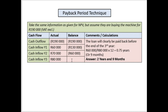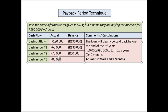I get 80,000 in — I don't care about the balance because I've already exceeded the period. So the loan will clearly be paid back before the end of the third year. Somewhere in that third year we are cancelling out the negative 60,000. So how do we calculate it? The balance left is 60,000, my income expected in that year is 80,000. So 60,000 over 80,000 multiplied by 12 — because there are 12 months in a year — and I get an answer of 0.75 years.